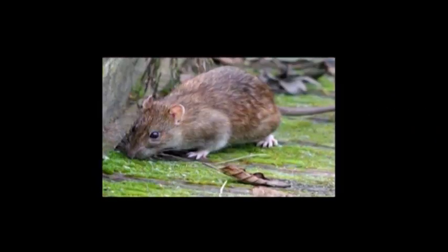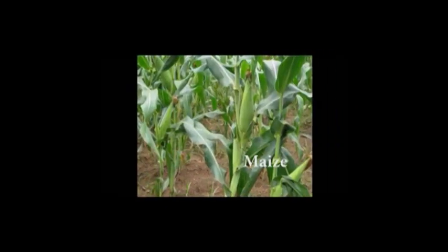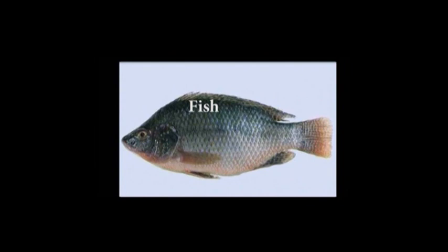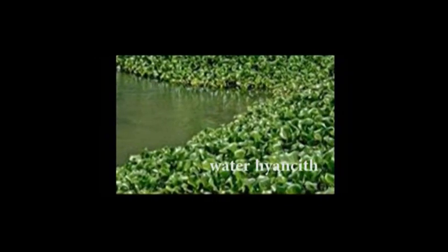Rats live in holes, bushes and rocks. Maize plants are found or grow on land. Fish live in water — sea, rivers, etc. This plant lives and grows in water.